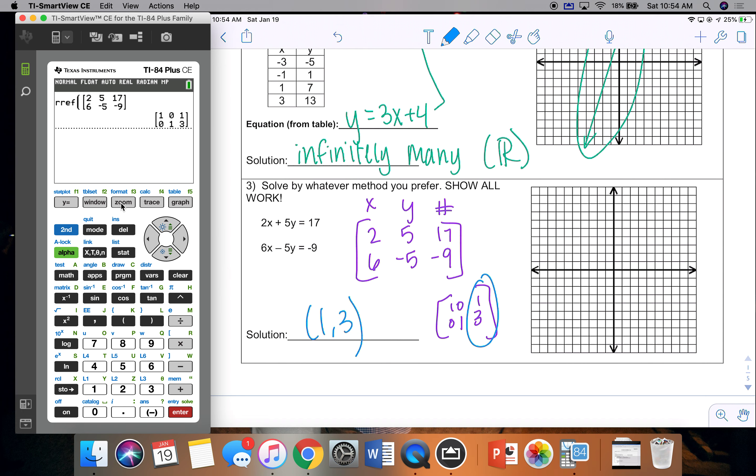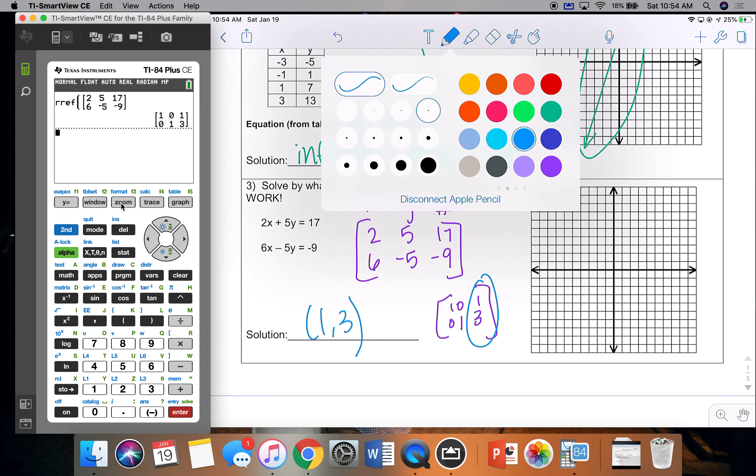But the 1, 0, 0, 3 reminds me that that is a nice normal solution. And then the 1, 0, 0, 3 on the right side is my solution.